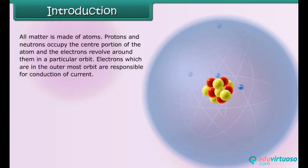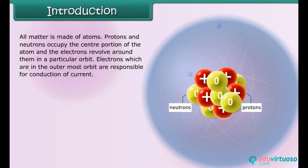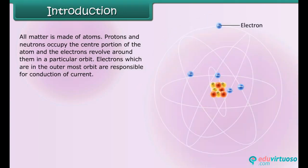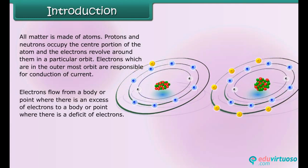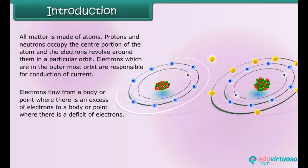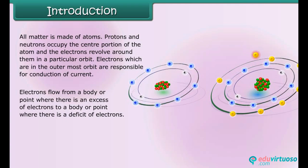All matter is made of atoms. Protons and neutrons occupy the center portion of the atom and the electrons revolve around them in a particular orbit. Electrons which are in the outermost orbit are responsible for conduction of current. Electrons flow from a body or point where there is an excess of electrons to a body or point where there is a deficit of electrons.